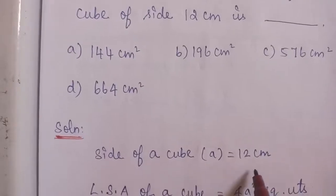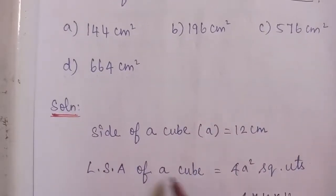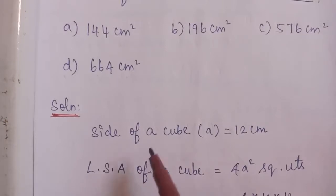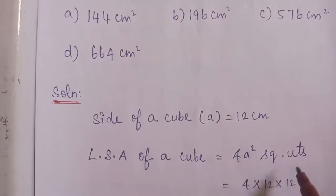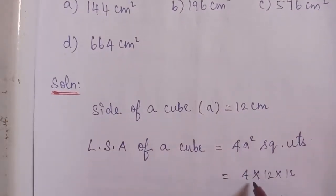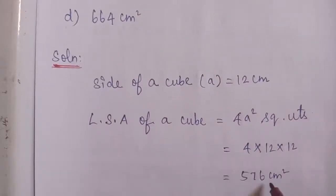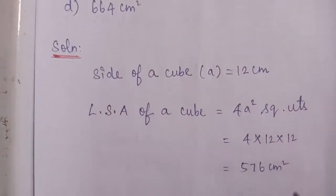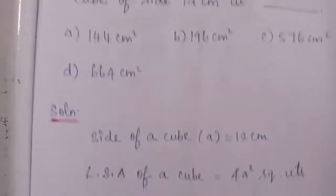Solution: Side of the cube A is equal to 12 cm. Lateral surface area means excluding the top and bottom portions. Lateral surface area equals 4A square, which is equal to 4 into 12 into 12, equal to 576 cm square. The correct answer is Option C: 576 cm square.